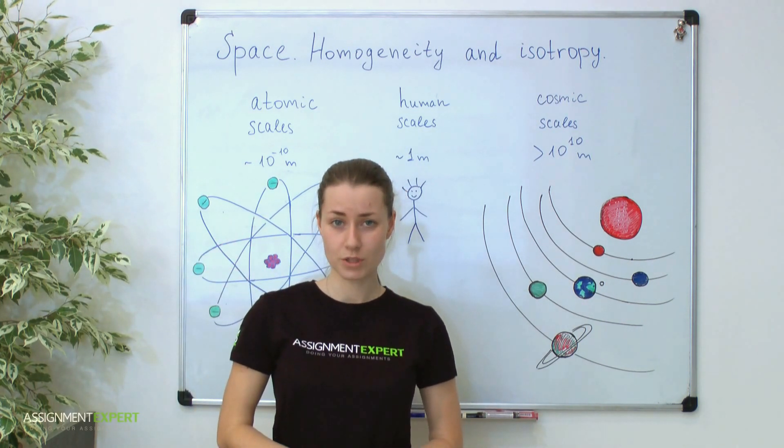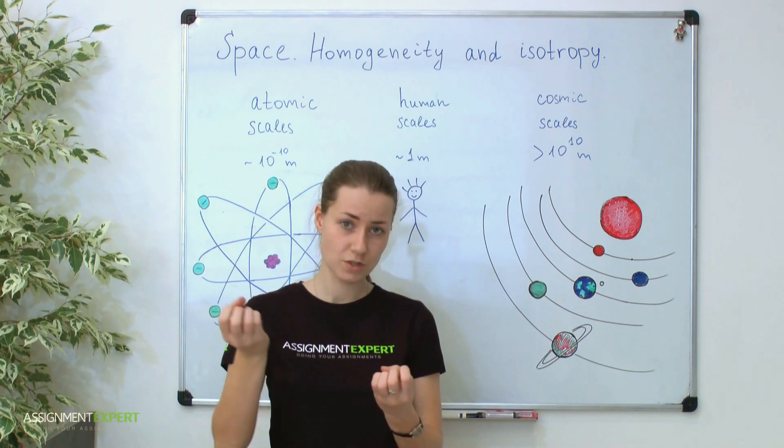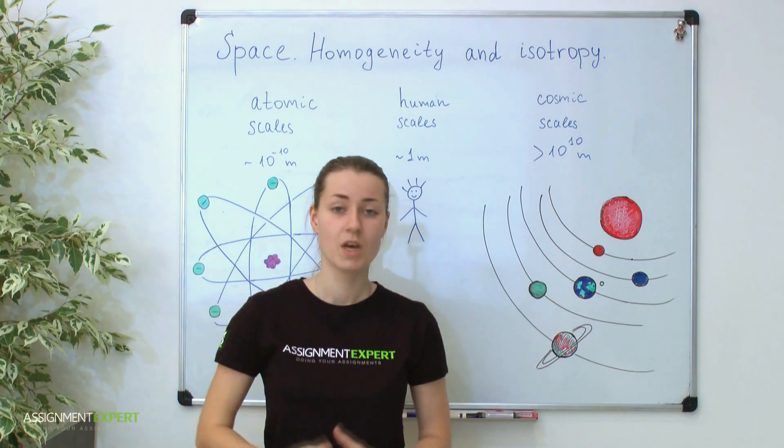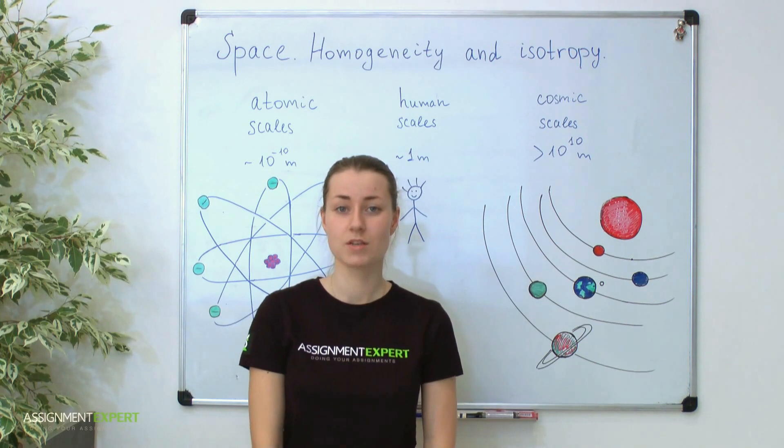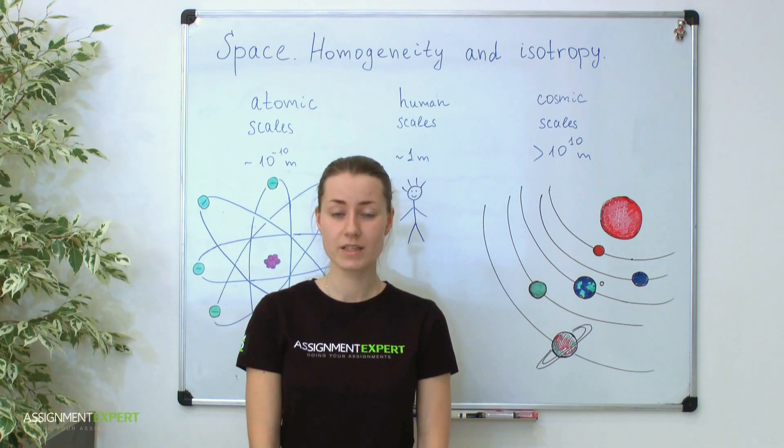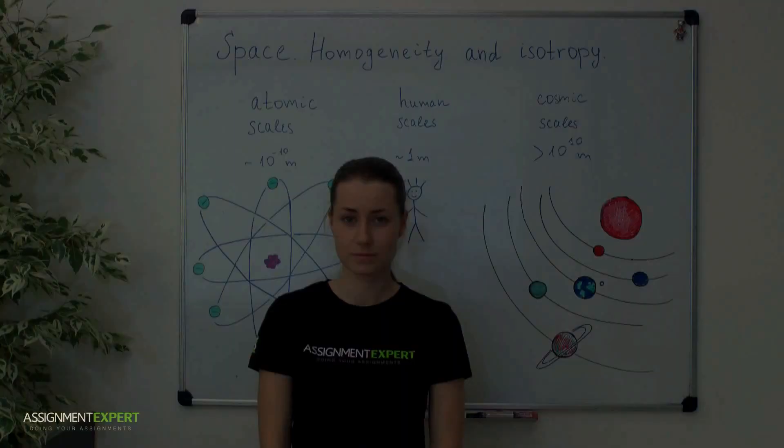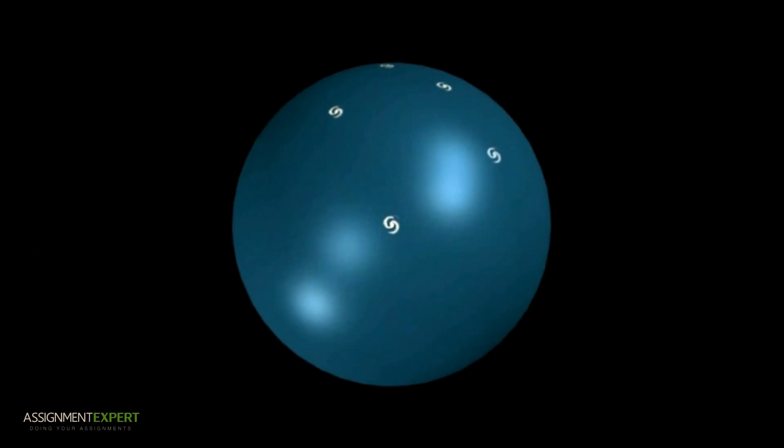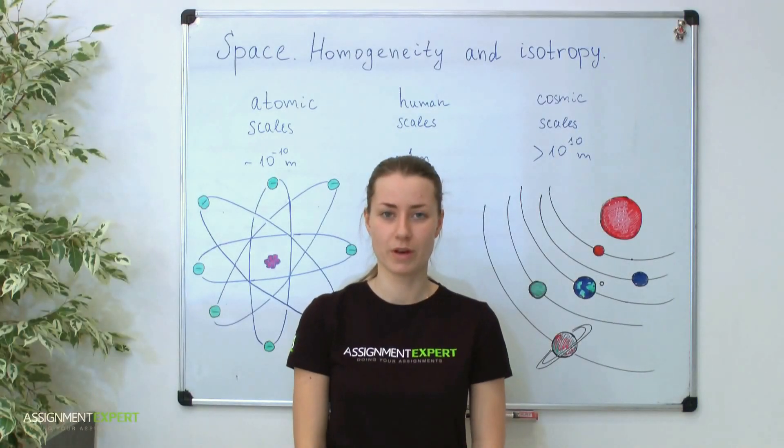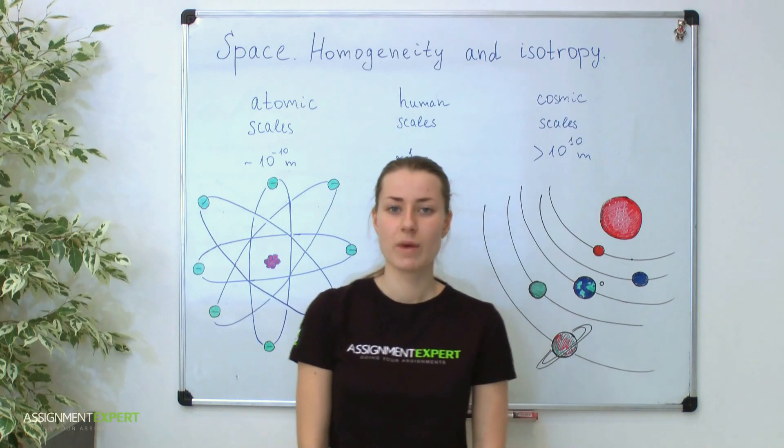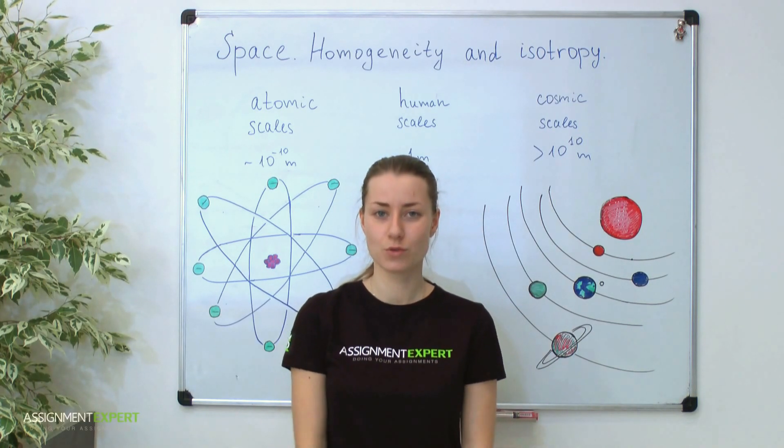It means that any two cosmic objects, for example two galaxies, are drifting one from another with time. You can imagine this process as an inflating of a balloon with the galaxies on its surface. While you inflate the ball, galaxies remain their size but drifting one from another. Therefore, we can imagine our space as something similar to rubber, which stretches by every second.